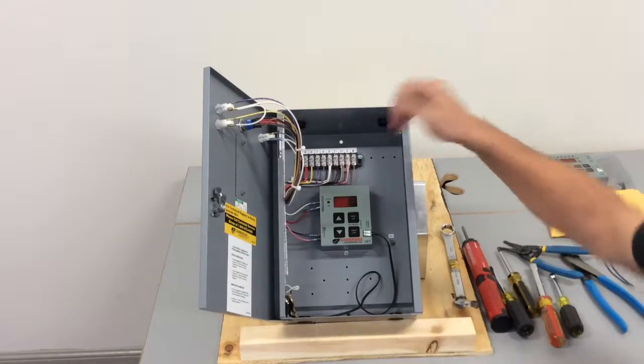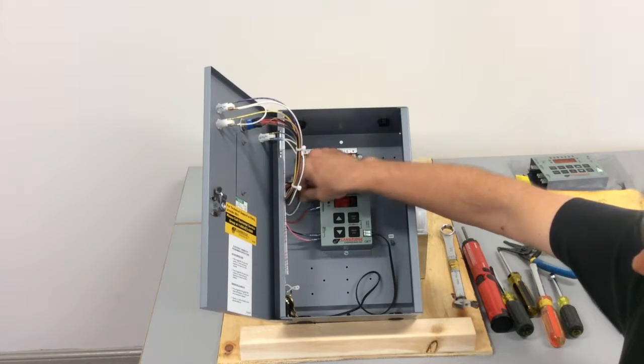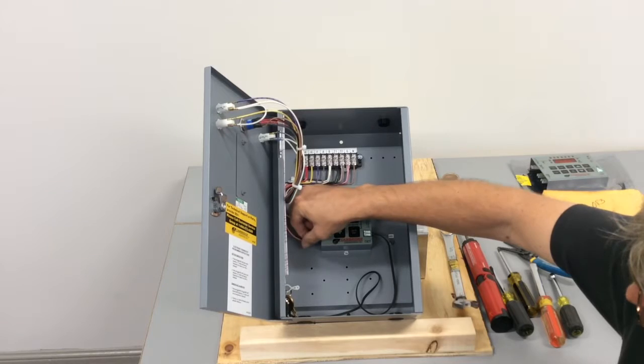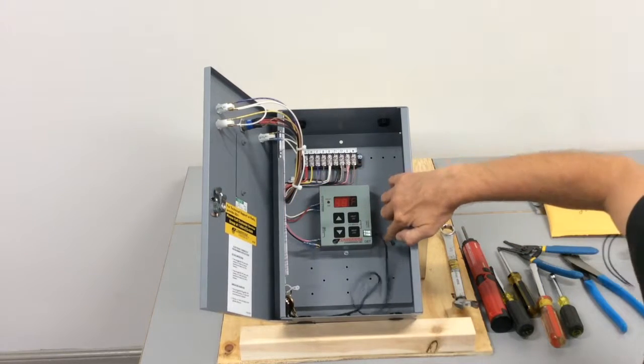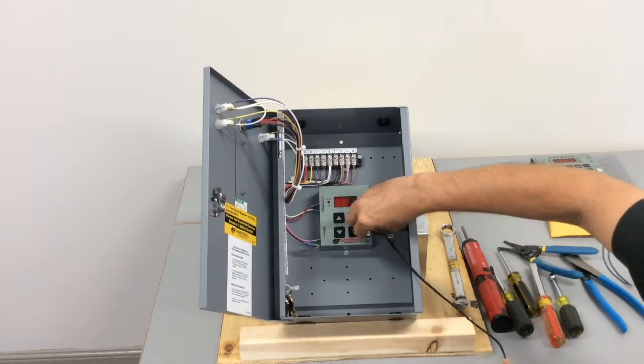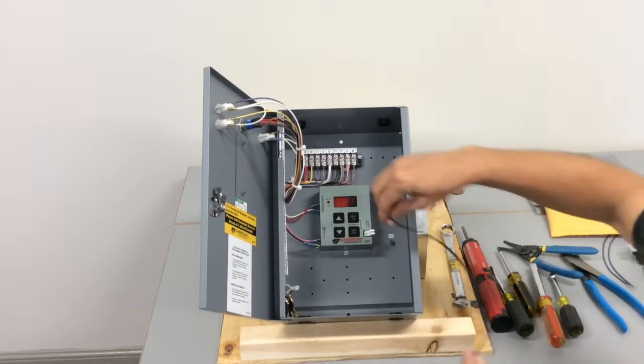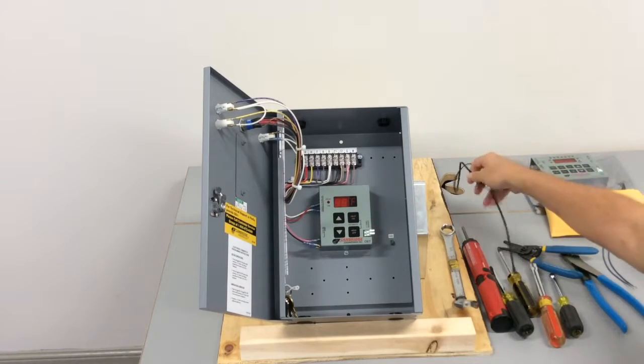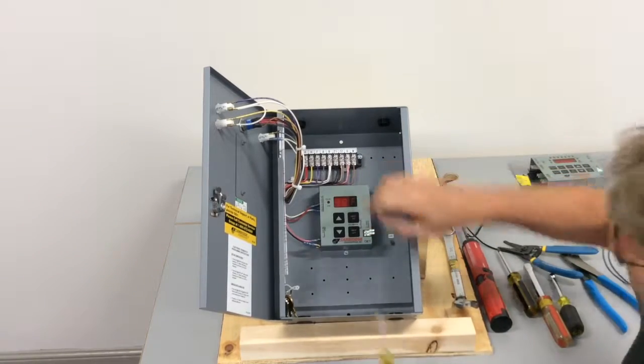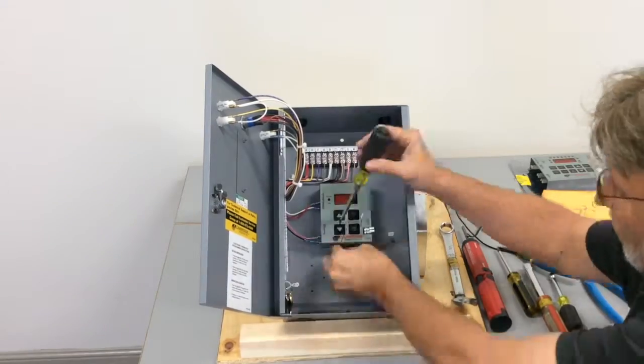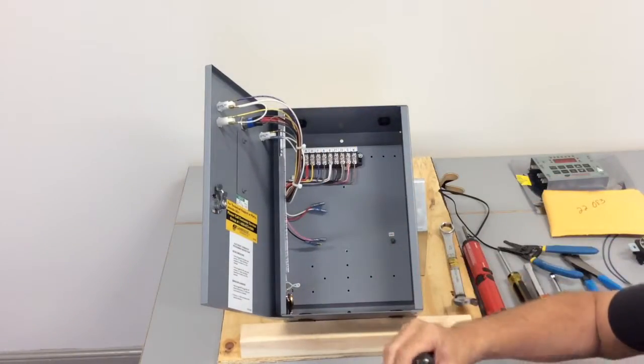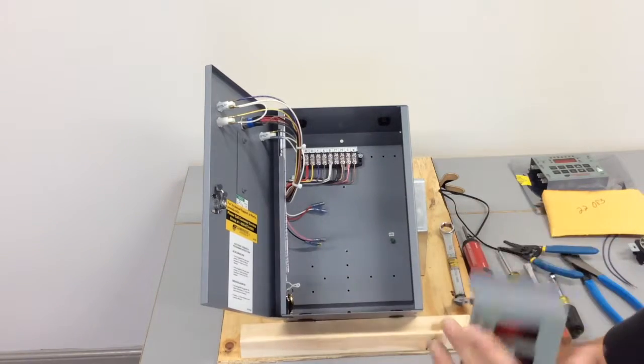So first off, we are going to go ahead and remove our four wires. We'll remove our sensor because we'll use this again with your TSS. Set this aside. We'll take our standard screwdriver and we will remove the OET. Okay, there's our OET.